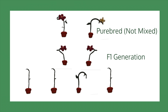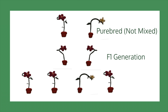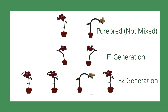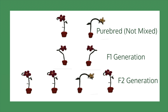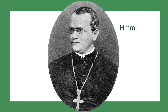Mendel bred the plants in the F1 generation together, making the F2 generation. While the F1 generation had only purple flowers, the F2 generation would have one white flower plant to every three purple flower plants. This means that he got white and purple flowers in a 1 to 3 ratio. He hypothesized that there must be something affecting the flower color — something he dubbed a factor.